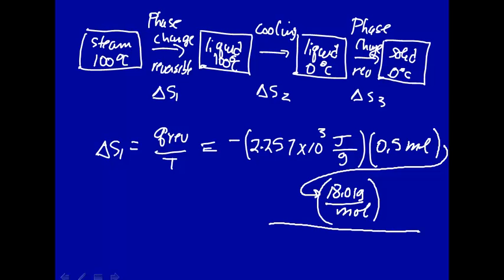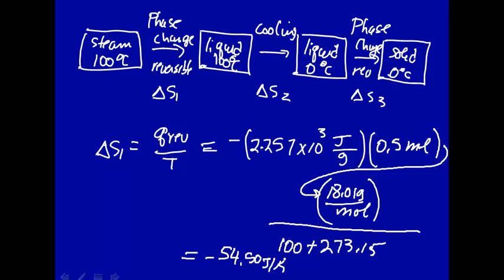We divide all of this by the temperature, which is 100°C converted to Kelvin: 373.15 K. Plugging those numbers in — don't forget that minus sign — we get minus 54.50 joule per Kelvin for the first step. Note that the entropy decreased, which makes sense: we went from steam gas molecules to a liquid, and a liquid has less entropy than steam qualitatively, so final minus initial is negative.